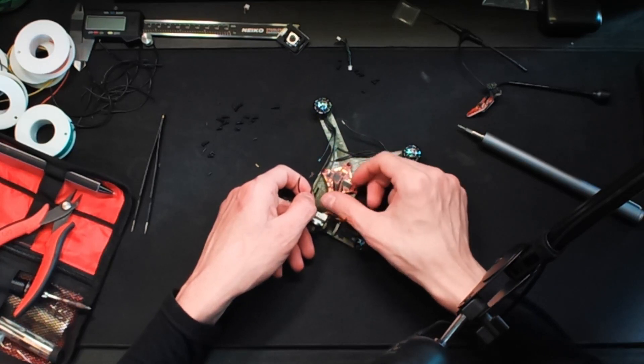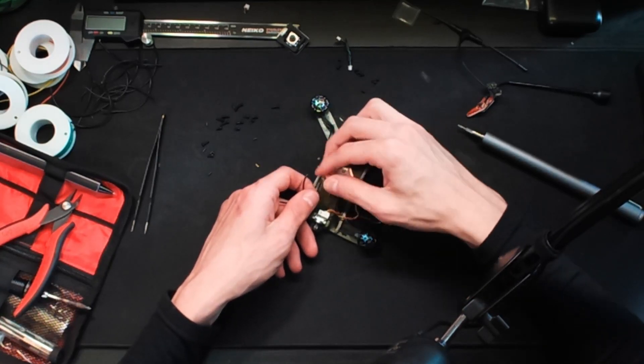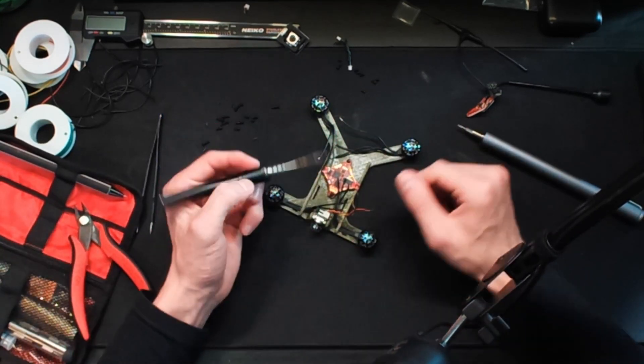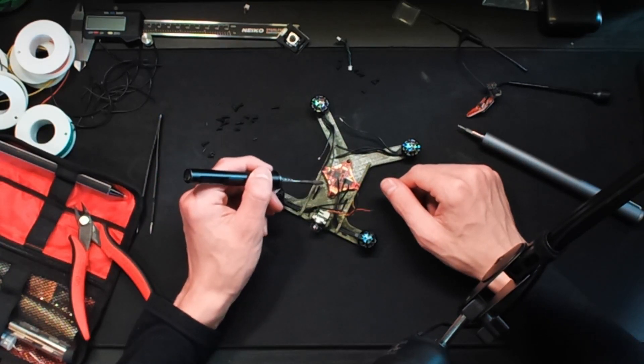Okay, now that we have all of our wires stripped, we are going to do the process called tinning. And this is where we take our soldering iron, and we go through and we add a little bit of solder to each one of these wires, as well as to our motor pads.